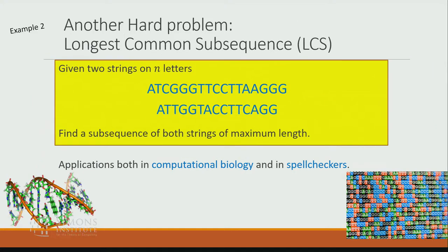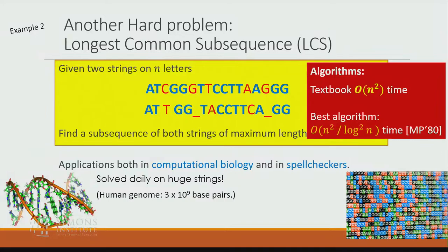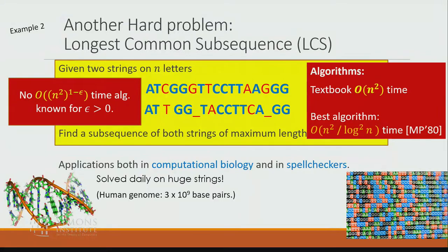Another example is the longest common subsequence problem. We are given two strings with at most n characters — say, all characters are ATGC — and the task is to find a subsequence of both strings that has maximum length. This problem has applications in both computational biology and spell checkers. The textbook dynamic programming algorithm runs in O(n²) time. The current best algorithm is slightly faster, running in n²/log²(n) time. However, we want to solve this problem on large inputs such as the human genome. In these cases, even n² running time — though polynomial — will still be too slow in practice. So far, there is no n^(2·(1−ε)) time algorithm known for this problem.